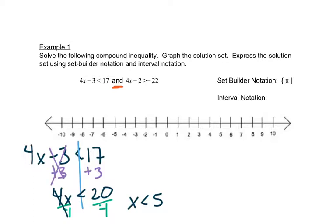We'll do this other piece now. We'll do the 4x minus 2 is greater than negative 22. Again, we're going to add 2 to both sides.